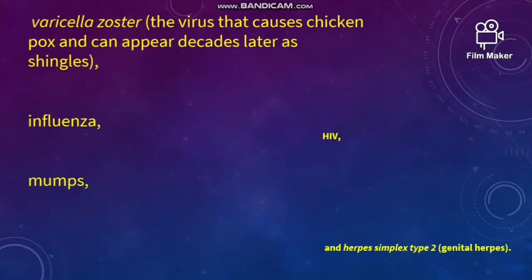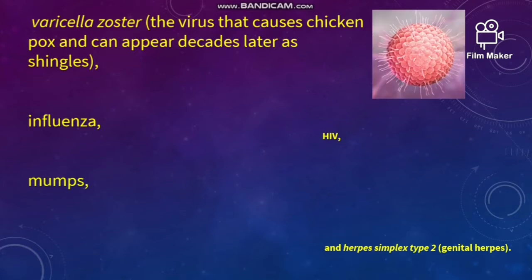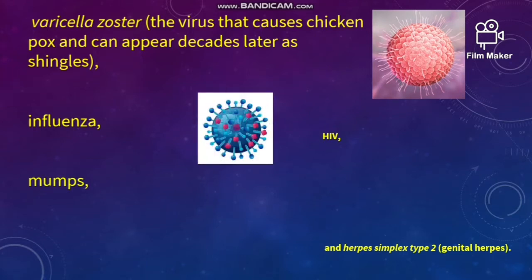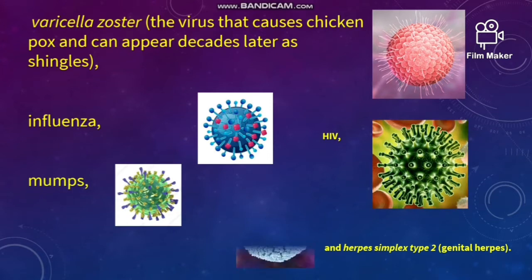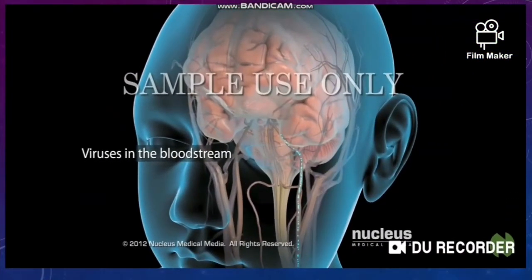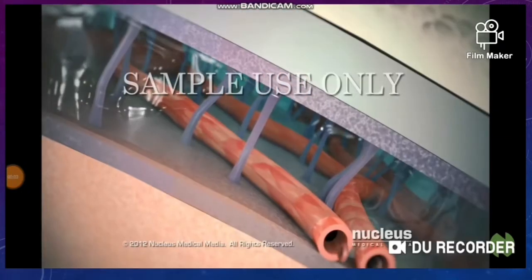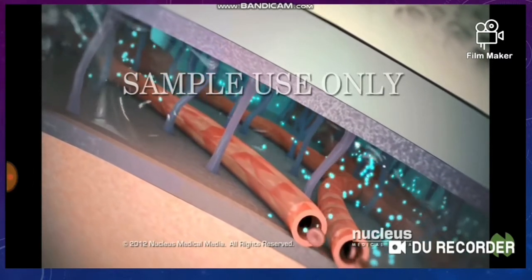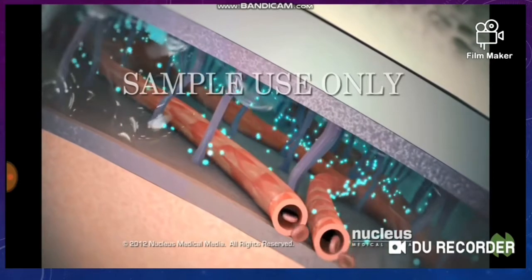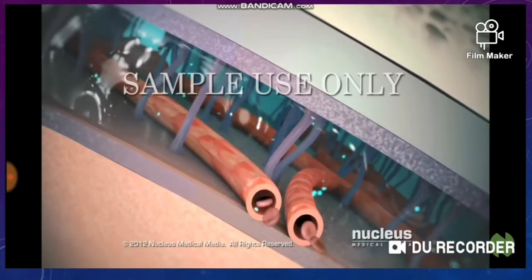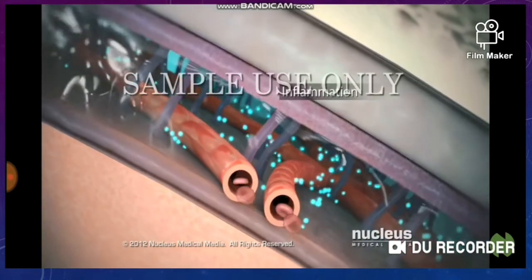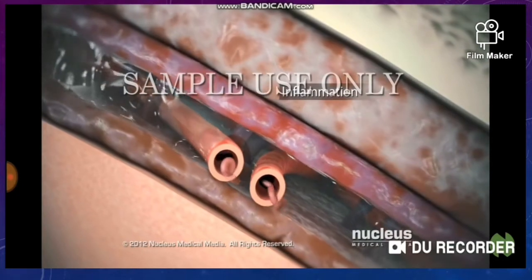Other viruses that cause meningitis include varicella zoster, influenza, mumps, HIV, and herpes. Viruses travel through the bloodstream to the brain. They cross the border between the bloodstream and the brain into the cerebrospinal fluid. The viruses spread throughout the cerebrospinal fluid and infect the cells of the meninges. The meninges become inflamed as the immune system begins to fight off the infection.